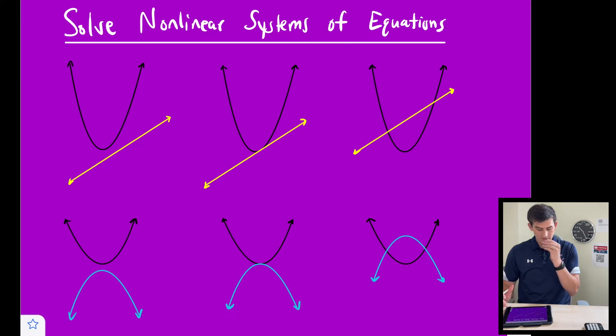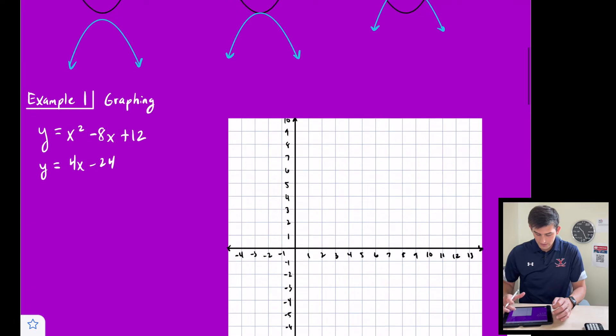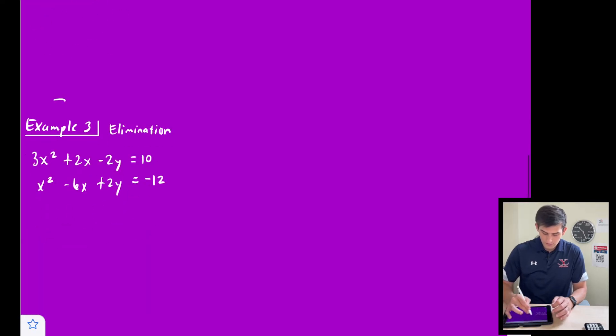Now below that, we have two parabolas, which would be two quadratic equations in the system. And so here, we have no solution. Again, we could have one solution, or we could have two solutions as well. So let's jump right in and let's start on graphing.